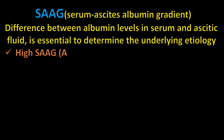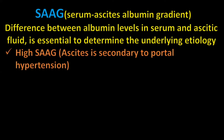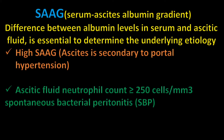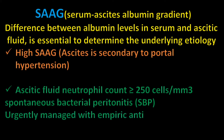A high SAAG indicates ascites secondary to portal hypertension. If in ascitic fluid we have a neutrophil count greater than or equal to 250 cells per mm³, this indicates spontaneous bacterial peritonitis, which requires urgent management with empiric antibiotic therapy.